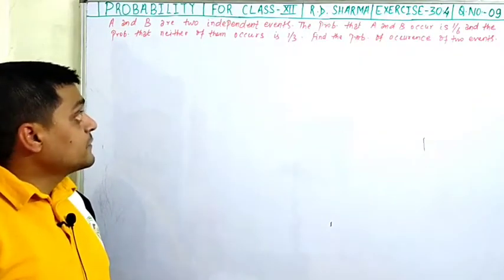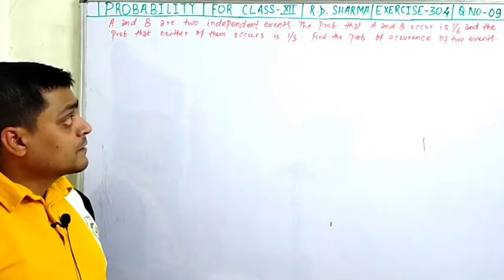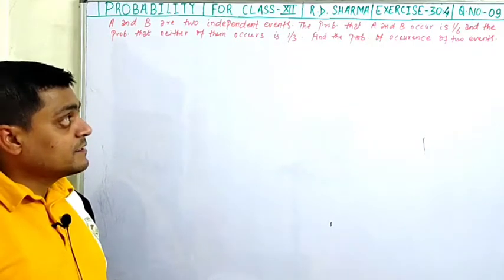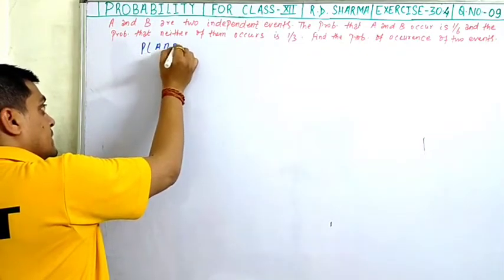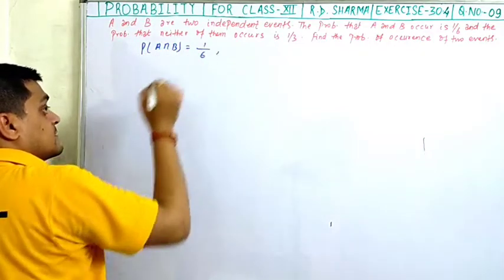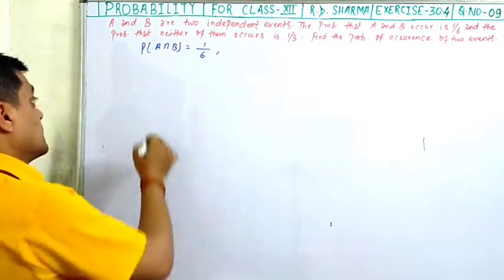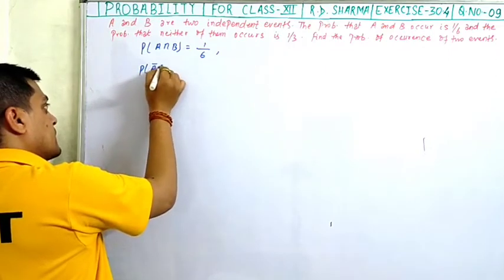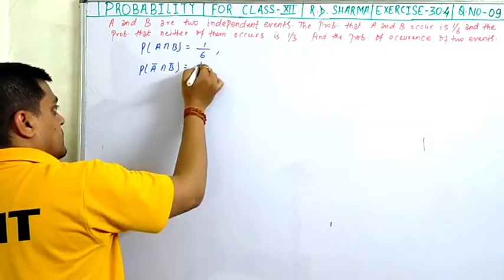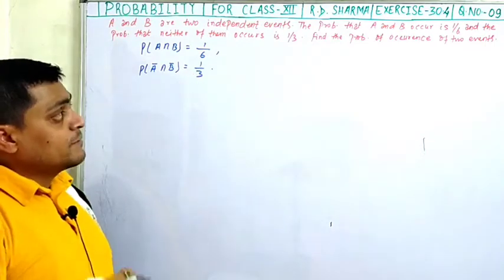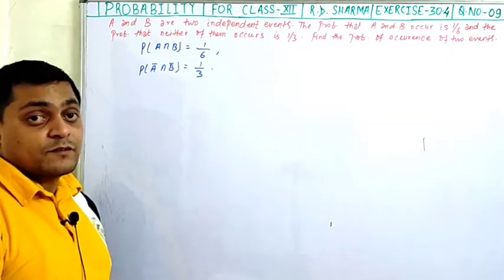The question is: A and B are two independent events. The probability that A and B occur is 1 upon 6, and the probability that neither of them occurs — that is, probability of A' and B' — is 1 upon 3. We need to find the probability of A and the probability of B.